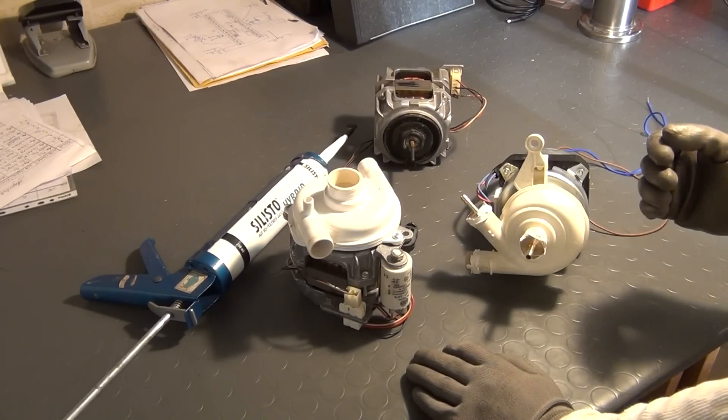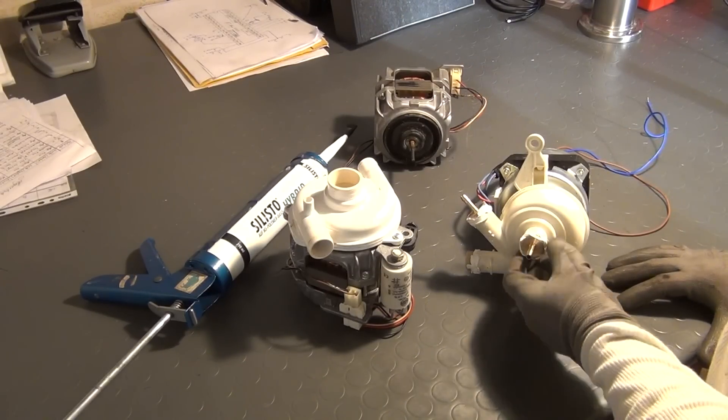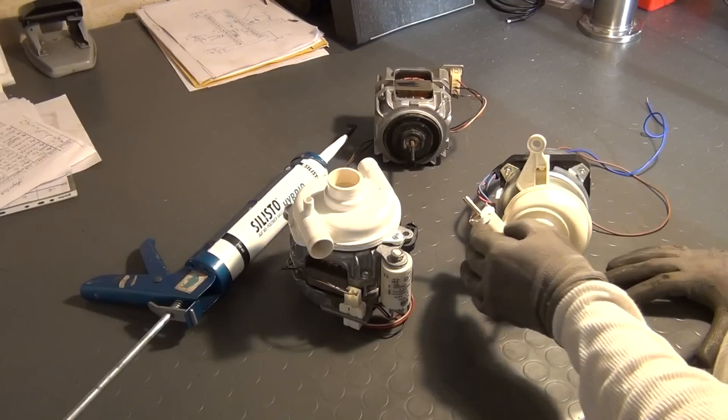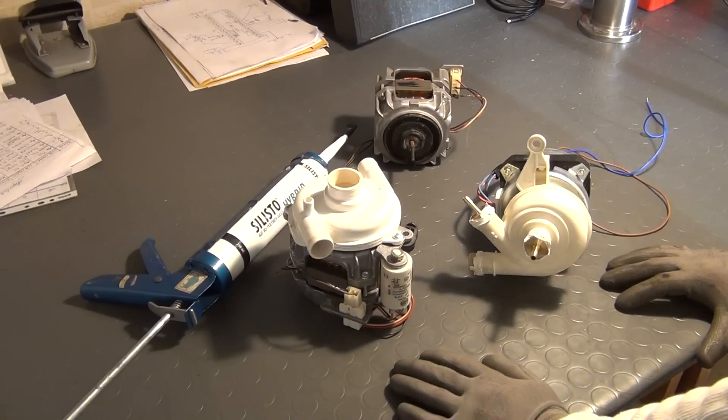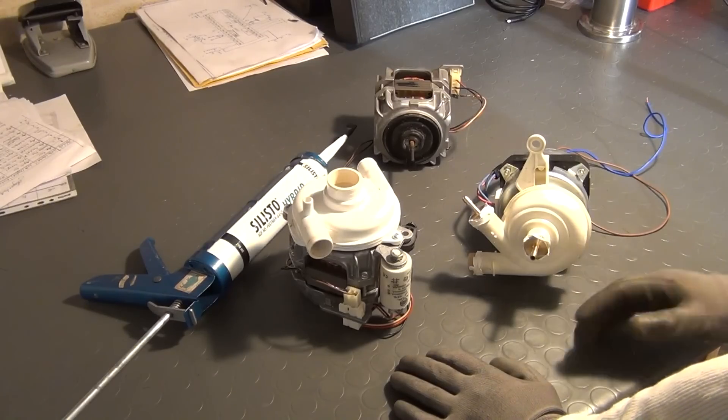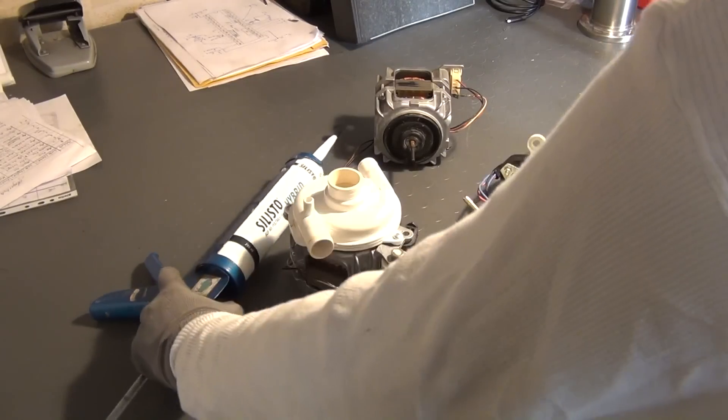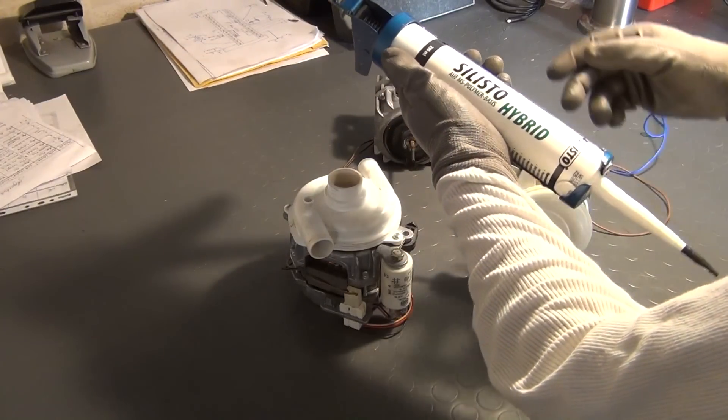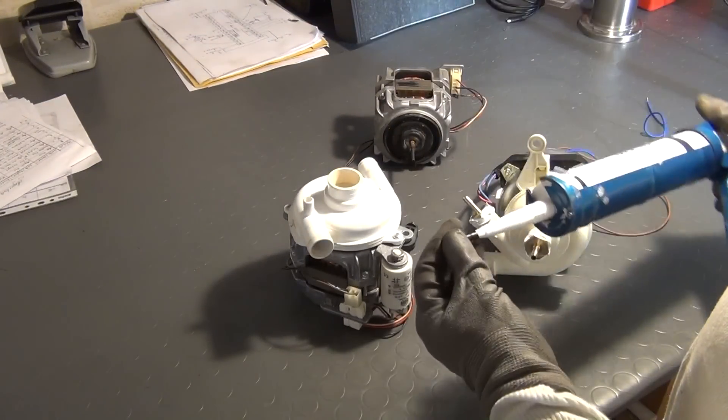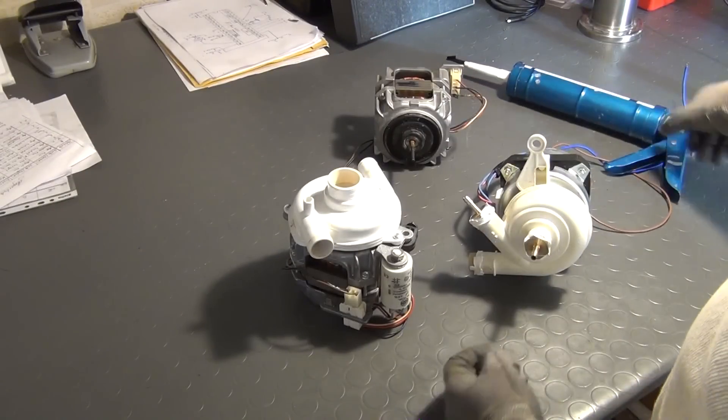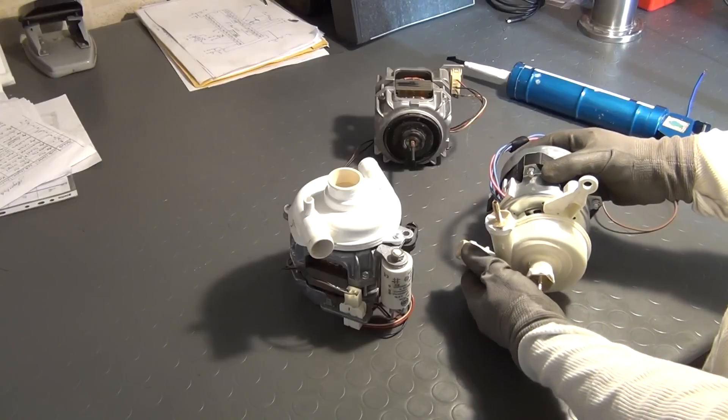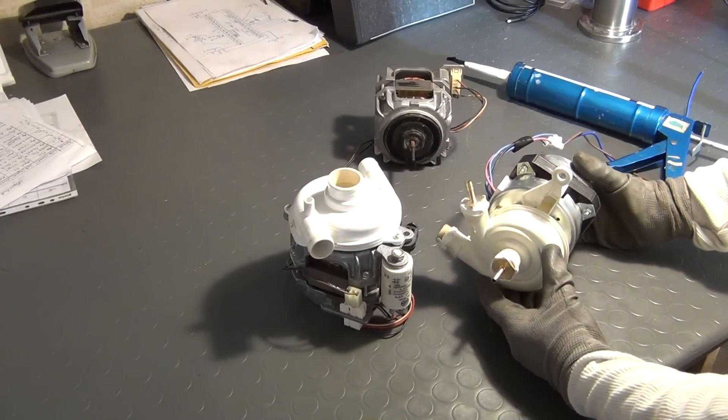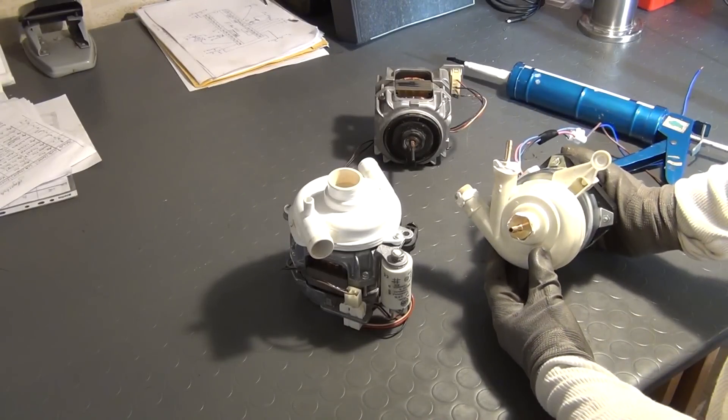At the end of that video I said that I had still issues with water leaking out of the edges here and that I would try to make a seal with some kind of polymer or adhesive. And what I found to be working quite well is this stuff. It's a so-called MS polymer-based adhesive. And I basically put it all around the edges right here to make a perfect seal and it's working quite well. This is the pump that we saw in the last video.